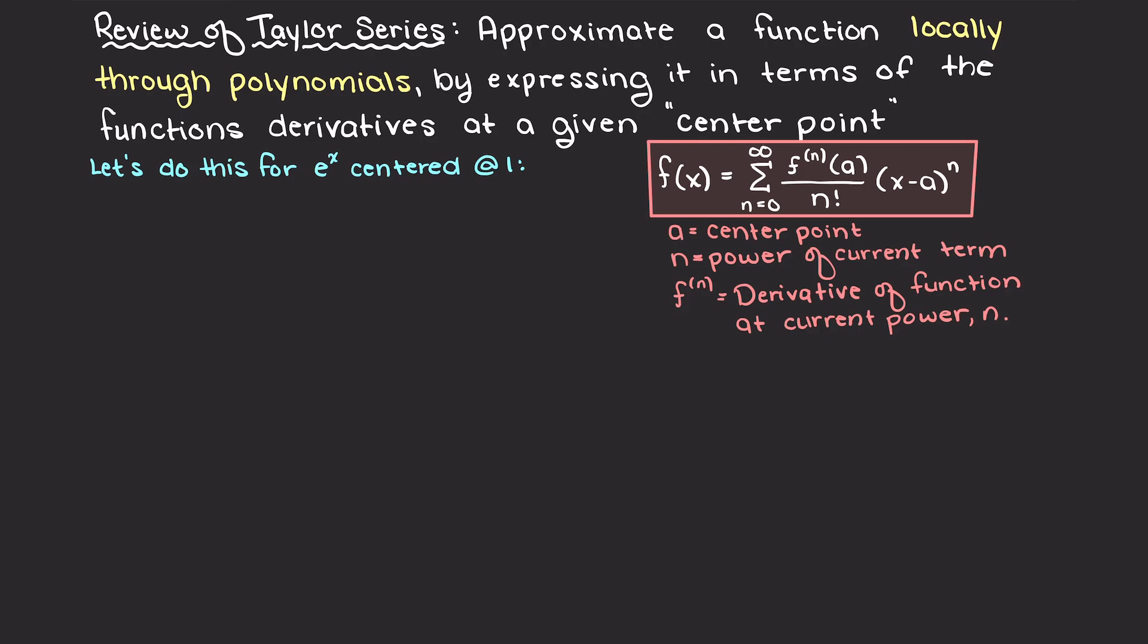Looking at our formula here, our x is a small future x value that we are going to be finding. A is our center point and n is our term's power, which will make more sense here shortly. Now, let's say that we want to find up to our second order Taylor series approximation.